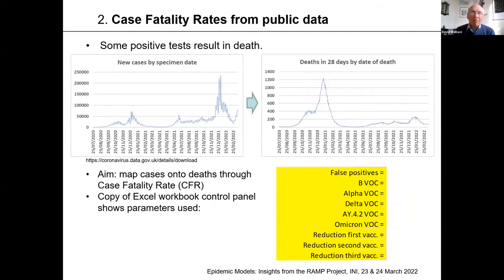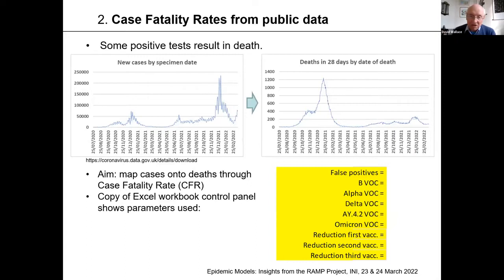So, case fatality rates. What we're trying to do is take the new cases by specimen date — that's the chart on the left — and map it onto the deaths within 28 days by date of death. Ideally I want to map the left-hand chart to the right-hand chart, take the ratio, and see how close it is to one. I'll show charts of that later on. The control parameters — these are the parameters I actually have in the model, in the workbook — allow for false positives, for the B variant, alpha, delta, a sub-variant of delta, and the omicron variants.